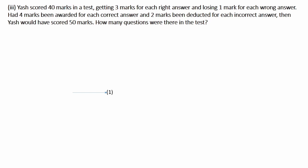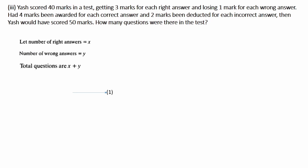The second condition: if 4 marks are awarded for a correct answer instead of 3, and 2 marks are deducted for an incorrect answer instead of 1, she would have scored 50 marks. The question asks how many questions were in the test. Let x be the number of right answers and y the number of wrong answers; total number of questions will be x plus y.